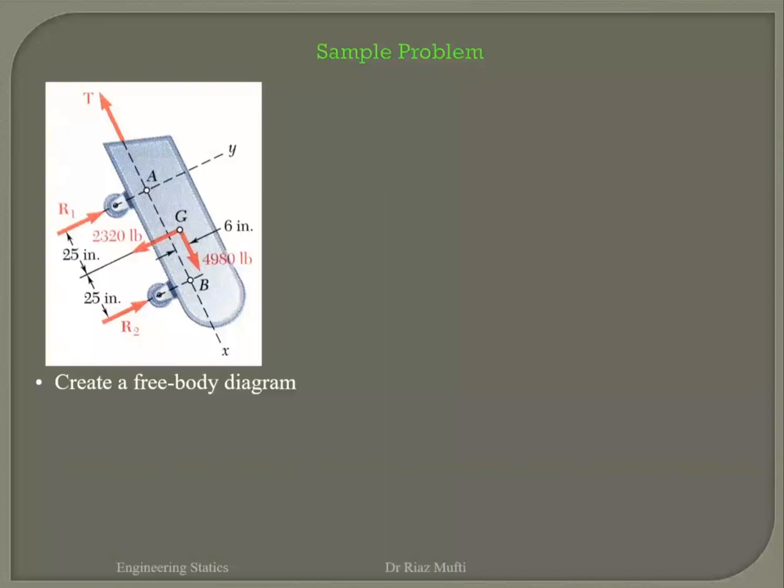I can have my axis like this one, x and y. It means I would have to split my T into two components, this one and this one. I would have needed to split my reaction into two components. That's this one and this one.